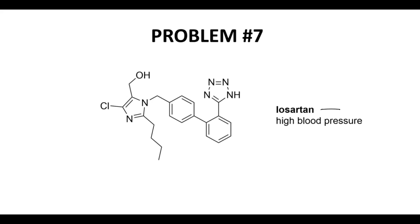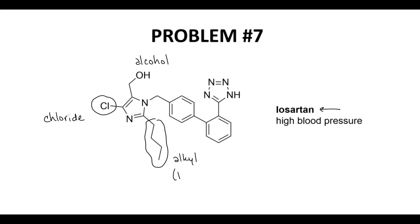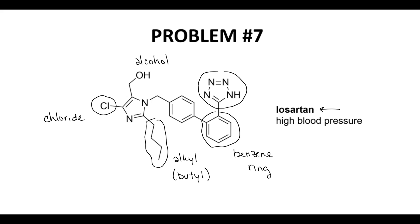Problem seven — this is the drug losartan, another high blood pressure drug. On the left, this is a halide, specifically a chloride or chloro group. Here's a nice OH — this is an alcohol in the upper left. This long carbon chain is an alkyl group; specifically it has a four-carbon chain called a butyl. We have two benzene rings in this structure. This nitrogen-rich structure is called a tetrazole, which appears in drugs from time to time, though most students wouldn't see it until second semester organic chemistry. So there are our functional groups in losartan.